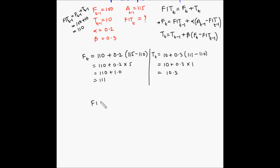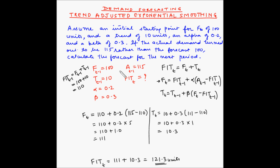So the forecast including trend for period t equals 111 plus 10.3 = 121.3 units. The forecast including trend for the next period is 121.3, given that the forecast for the previous period was 100, trend was 10 units, and the actual came out to 115.